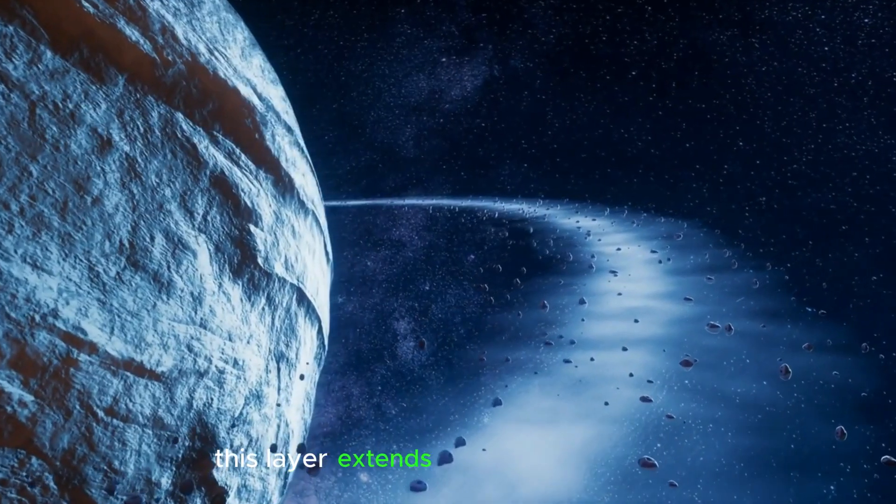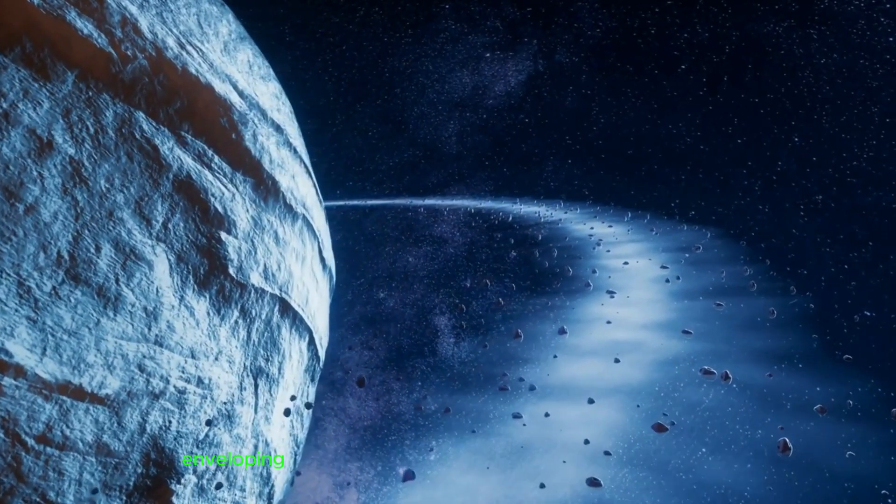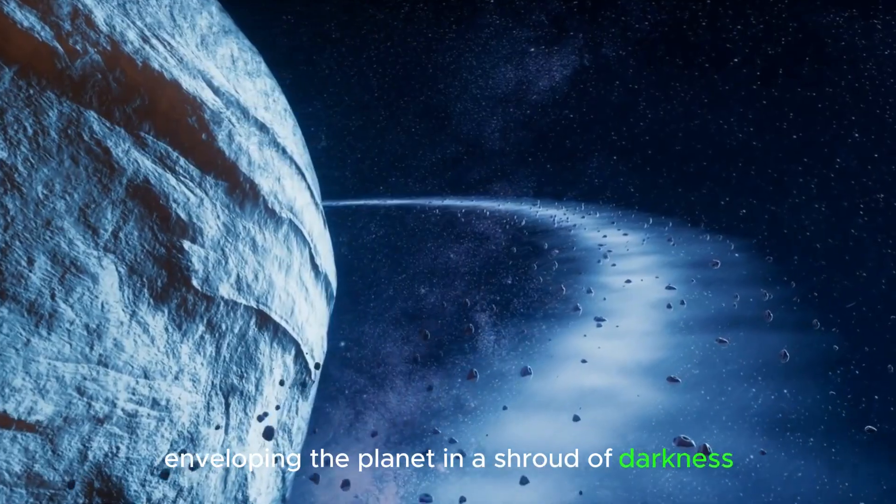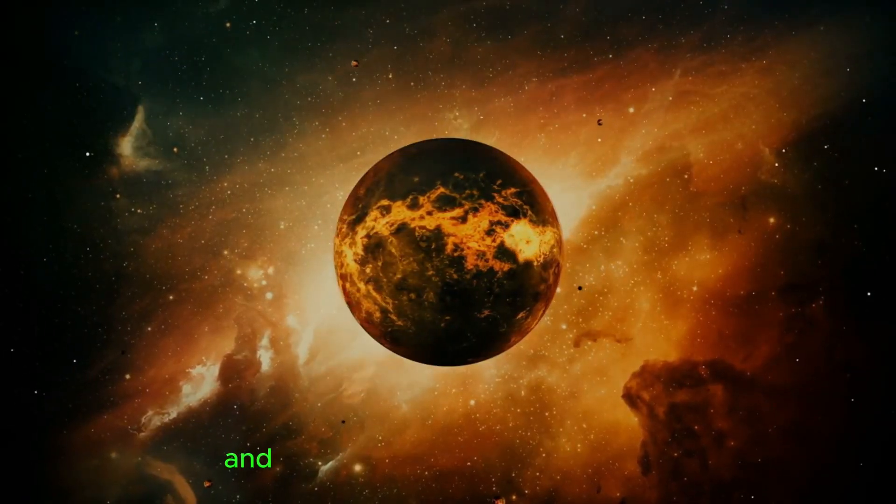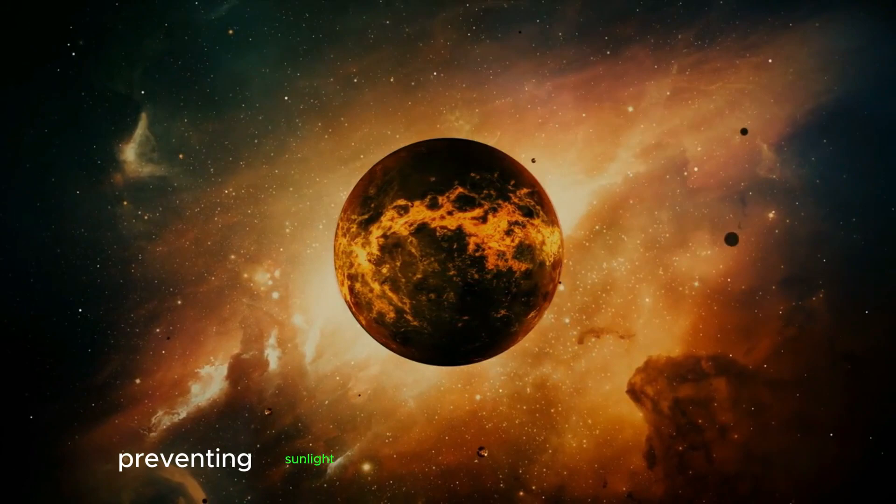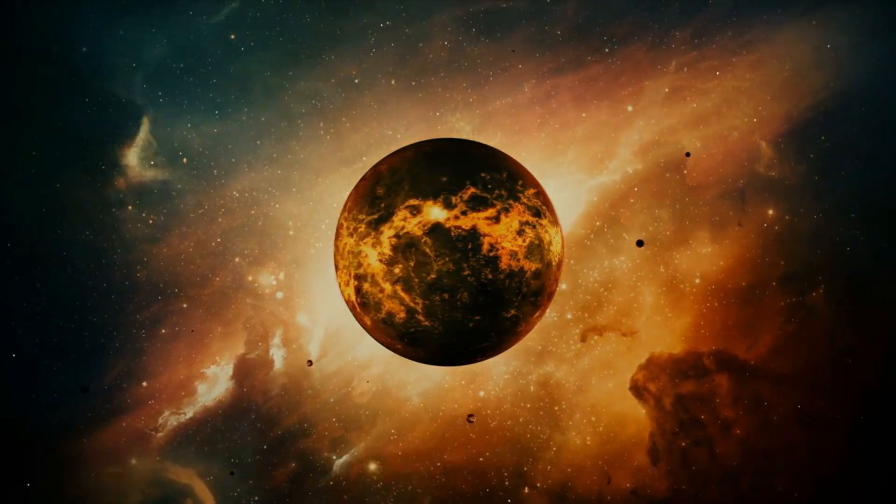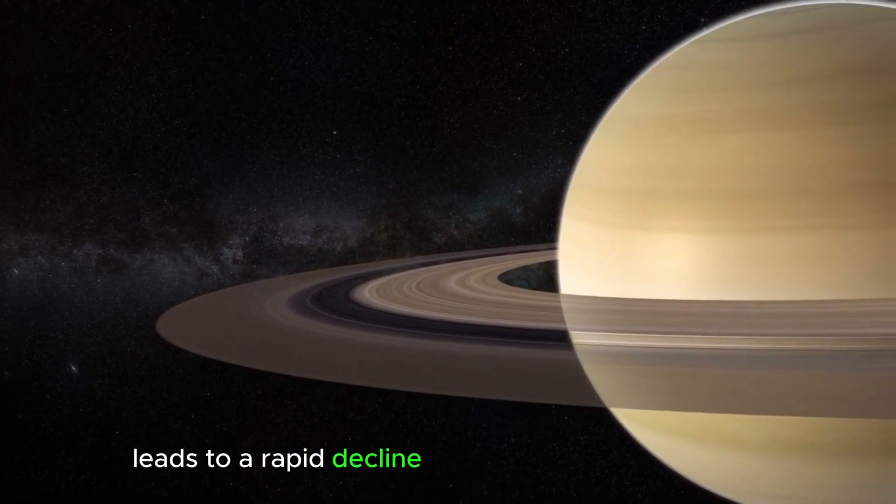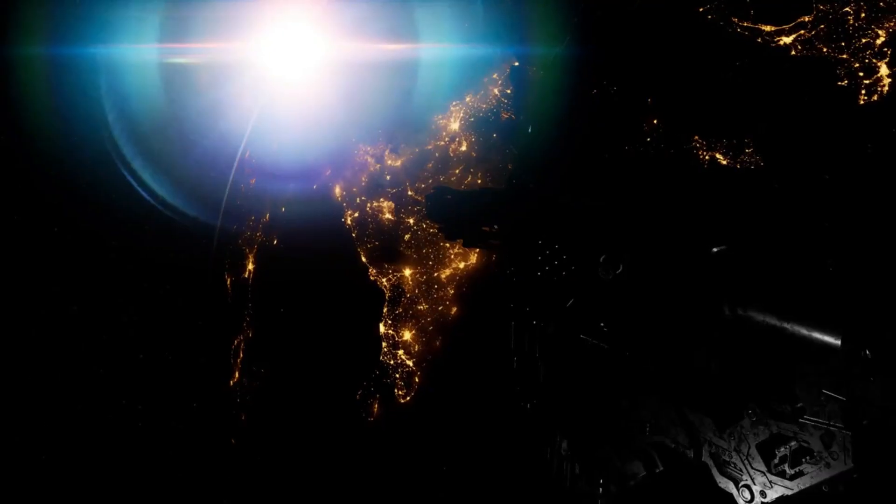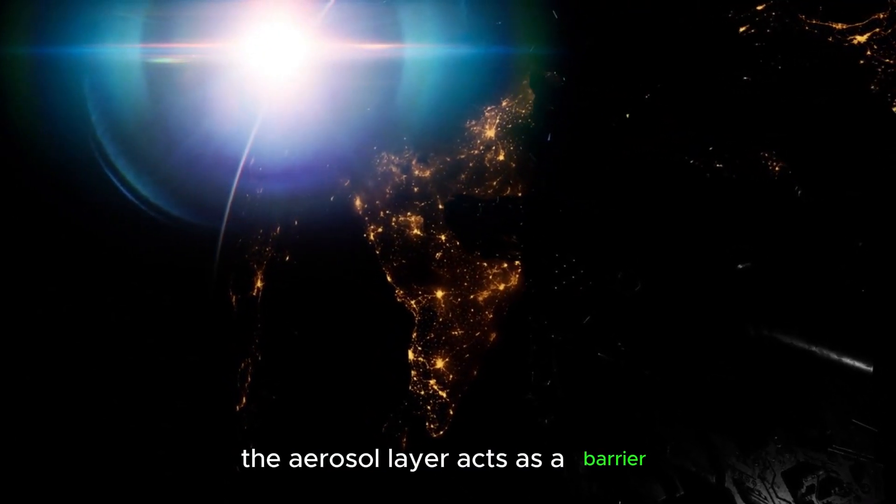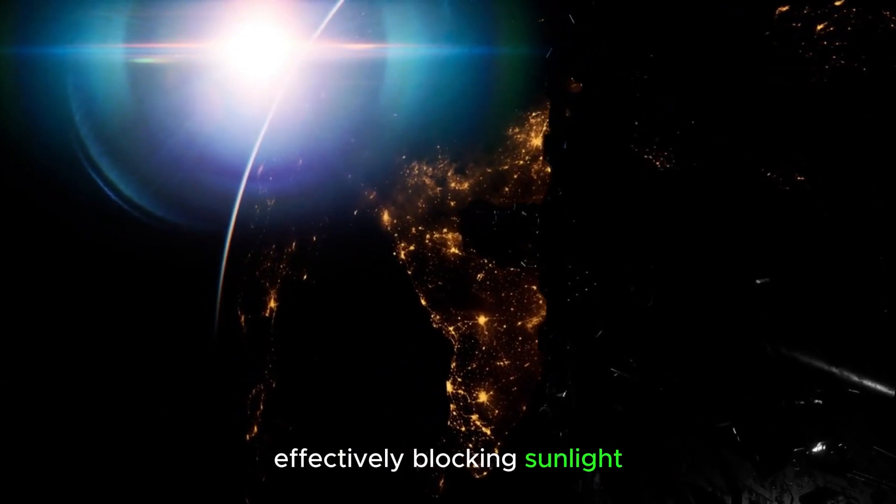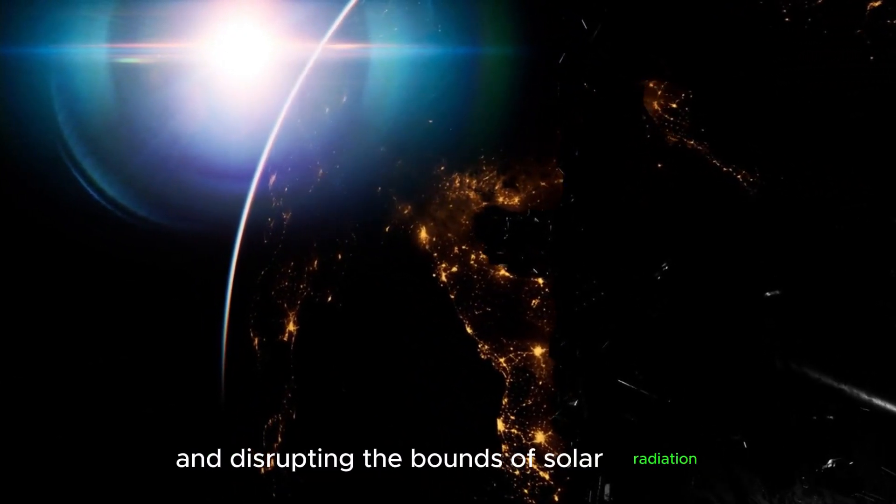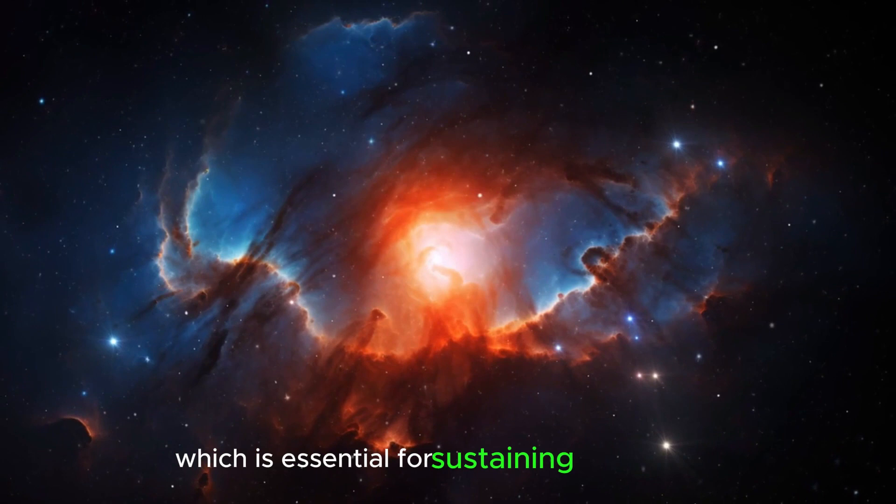This layer extends across vast regions, enveloping the planet in a shroud of darkness. The aerosols scatter and absorb incoming solar radiation, preventing sunlight from reaching the Earth's surface. This phenomenon, known as solar dimming, leads to a rapid decline in temperatures worldwide. The aerosol layer acts as a barrier, effectively blocking sunlight and disrupting the balance of solar radiation, which is essential for sustaining life on Earth.